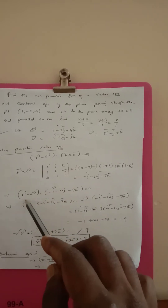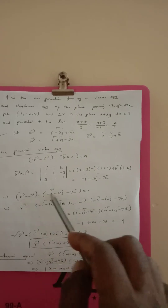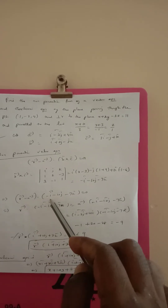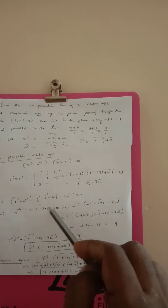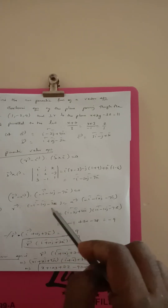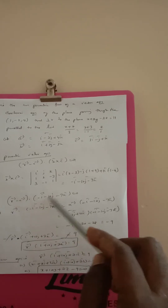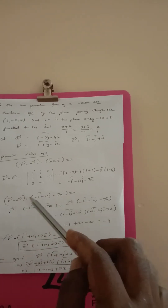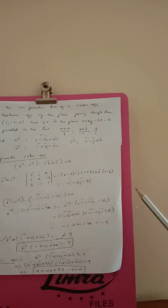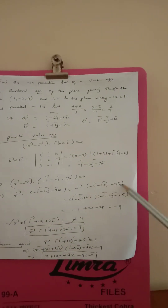Substituting into the equation, r vector minus a vector dot (minus i minus 10j minus 7k) equals 0. Expanding, we get r vector dot (minus i minus 10j minus 7k) minus a vector dot (minus i minus 10j minus 7k) equals 0.